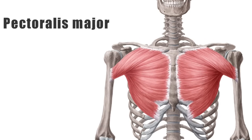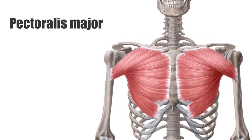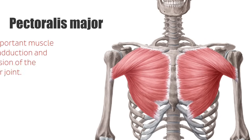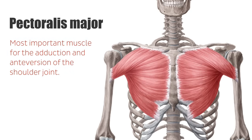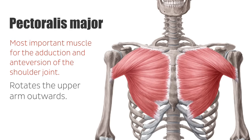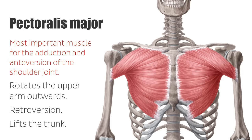The pectoralis major muscle is the most important muscle for the adduction and anteversion of the shoulder joint, which is why it is also known as the breast stroke muscle. It rotates the upper arm outwards and makes a powerful stroke movement called retroversion when the arms are elevated, for example in wood chopping. If the arms are fixed, the muscle lifts the trunk, which can be helpful in climbing or during inspiration.